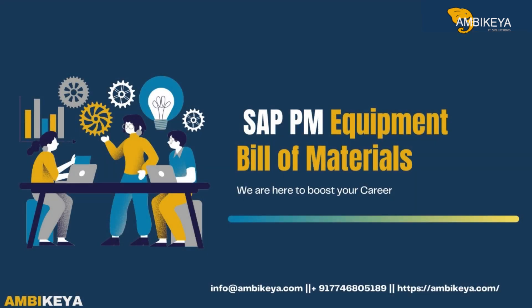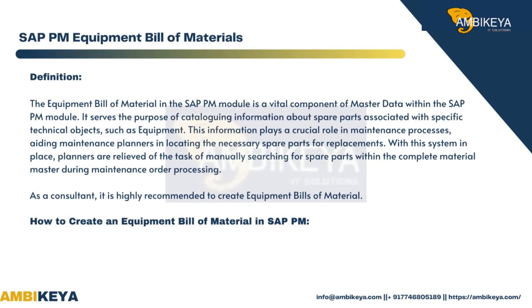I am going to explain about SAP PM Equipment Bill of Materials. The equipment bill of material in the SAP PM module is a vital component of master data within the SAP PM module. It serves the purpose of cataloging information about spare parts associated with specific technical objects such as equipment.